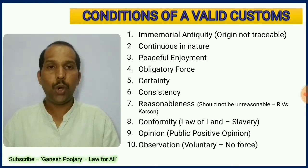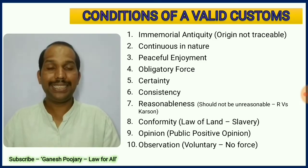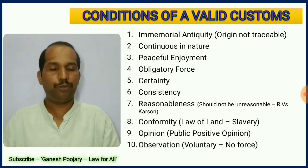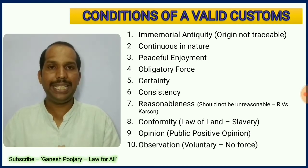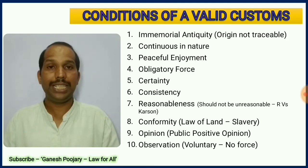The fifth condition is certainty — people should know why such a custom is followed, how it has been followed, and what is to be done. The sixth requirement is consistency: everybody should follow the custom in the same way; if people follow it differently, it is not a valid custom. The seventh is reasonableness, which is a very important aspect. In the case of R versus Carson, a wife could leave her husband without any reason and marry another person, which was felt to be unreasonable, so that custom was stopped.